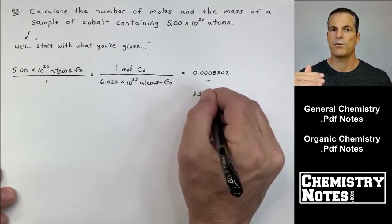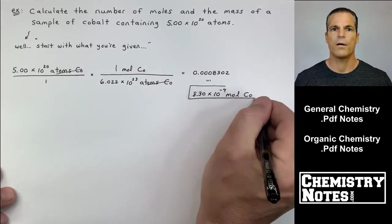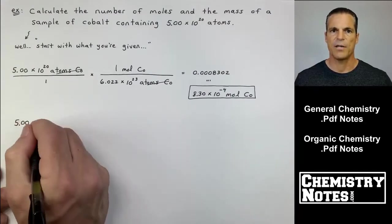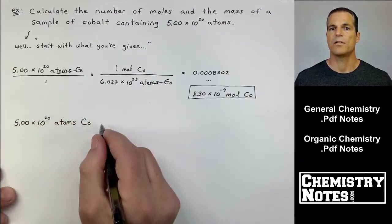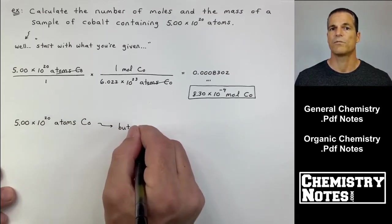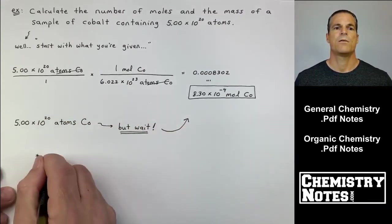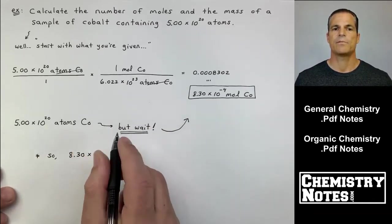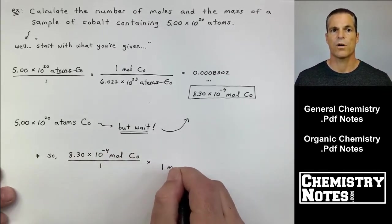Well, we start with what we're given. 5.00 times 10 to the 20th atoms of cobalt over one. For every 6.022 times 10 to the 23rd atoms of cobalt in the denominator, that's equal to 1 mole of cobalt. So I divide. And you should practice that to make sure you can do your division correctly on this. And I get 8.30 times 10 to the minus 4th moles of cobalt.